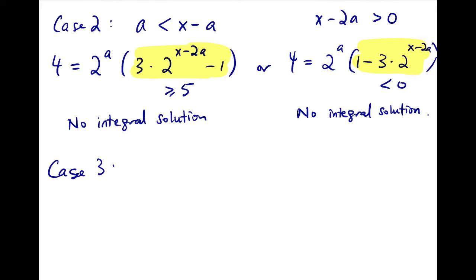The only thing left is that if a and x minus a are equal, so the two indices are equal, then we will again have two equations. 4 equals, this time is 2 times 2 to the a, because this time the two powers of 2 are actually equal, so we directly simplified it. Or 4 equals, this time we minus it in the other way, which gives us negative values, minus 2 times 2 to the a. So we quickly reject it. And for the other case, we will have a equals 1.